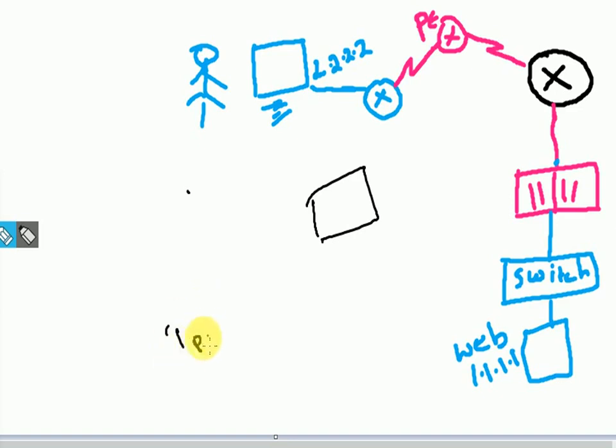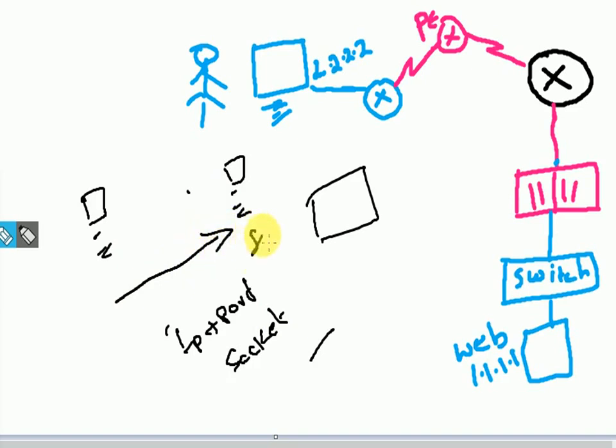The combination of IP address plus port is called a socket. The flow is nothing but the packet traveling from one source to one destination. For example, this is the source and this is the destination. This one directional flow is called the flow from one source to one destination.